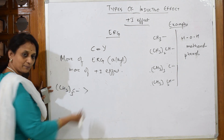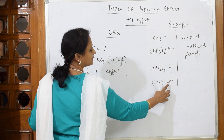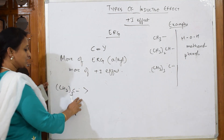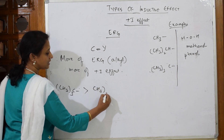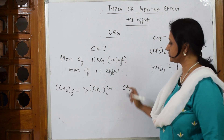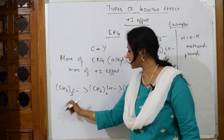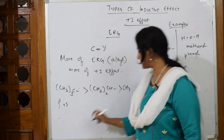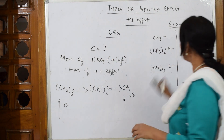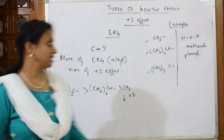So write the order: CH₃ taken three times has more +I effect, compared to CH₃ taken twice, and the least is CH₃ alone. This concept is based on alkyl groups — more alkyl groups means more +I effect, and fewer alkyl groups means less +I effect.